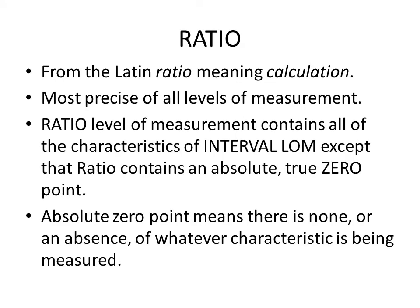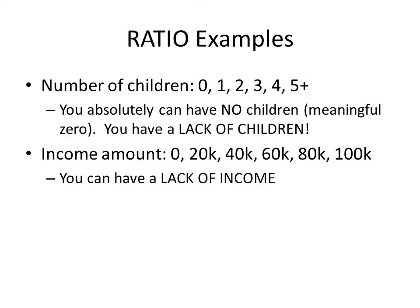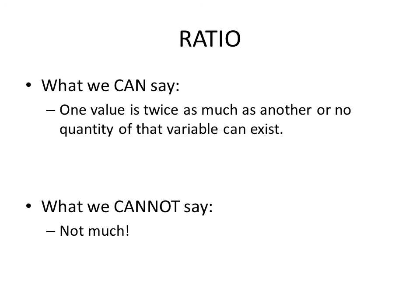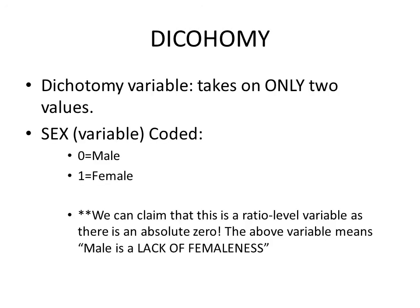Ratio is the most precise level of measurement. It contains all the characteristics of interval but also has an absolute true zero. An absolute zero point means there is none or an absence of whatever characteristic is being measured. For example, you can have no children — that is a meaningful zero. Income is also ratio — you can have no income. At the ratio level, we can say one value is twice as much as another, or that no quantity of that variable exists.